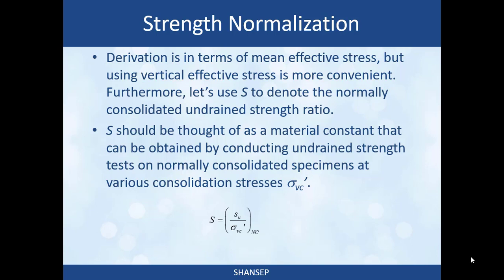Let's use the letter capital S to denote the normally consolidated undrained strength ratio in terms of vertical consolidation stress. The value of S should really be thought of as a material constant — it's a fundamental material property. You can measure it by conducting undrained strength tests on normally consolidated specimens at various consolidation stresses sigma VC prime, varying the consolidation stress and doing a regression to find capital S if the relationship is approximately linear.